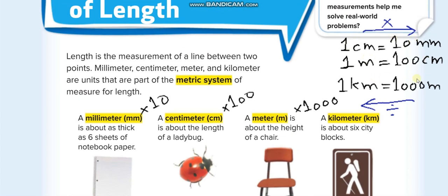You need to memorize these conversions: one centimeter equals 10 millimeters — multiply by 10 to get centimeters, multiply by 100 to get meters, multiply by 1,000 to get kilometers. So, to convert centimeters to millimeters multiply by 10; to convert meters to centimeters multiply by 100; and to convert kilometers to meters multiply by 1,000.